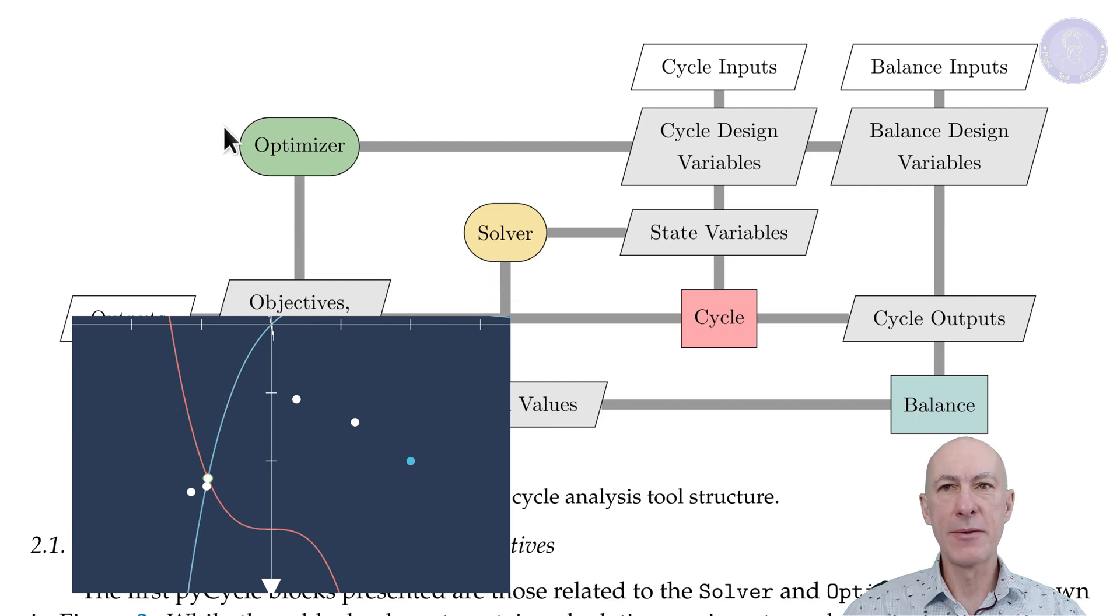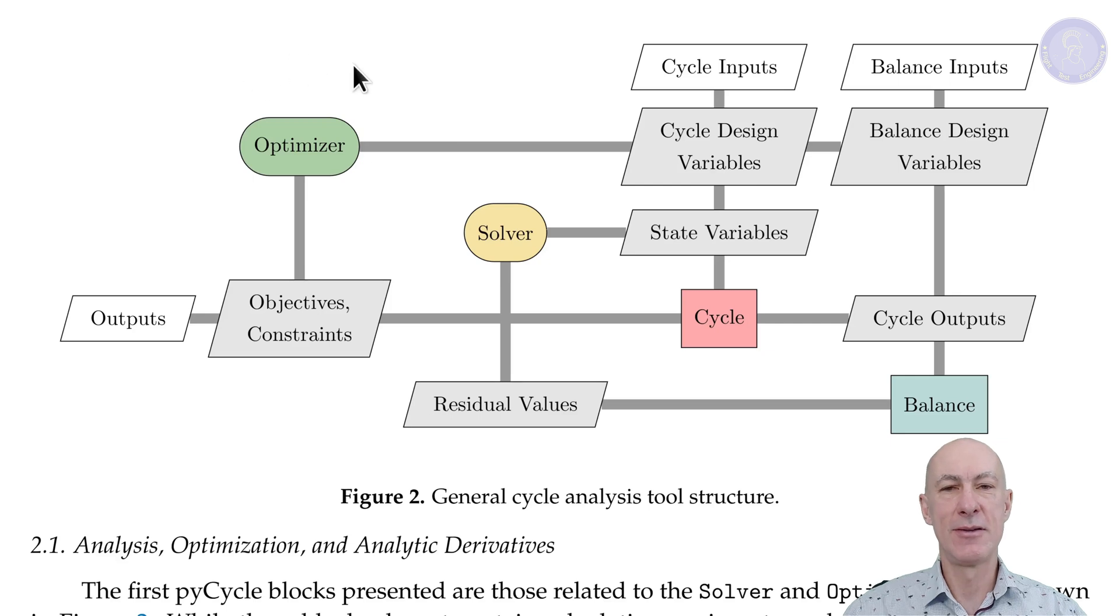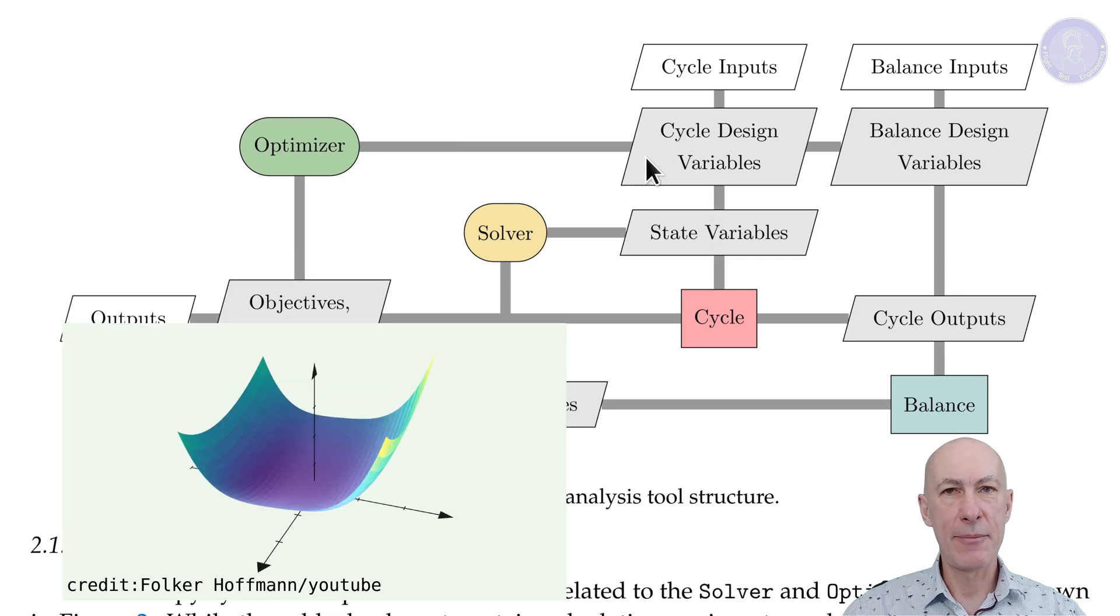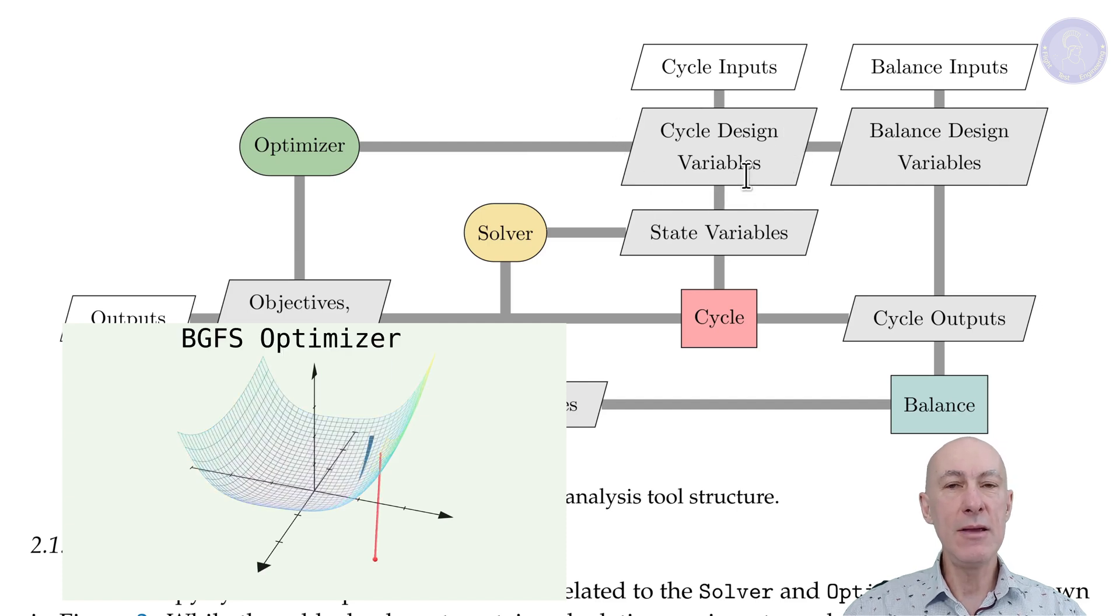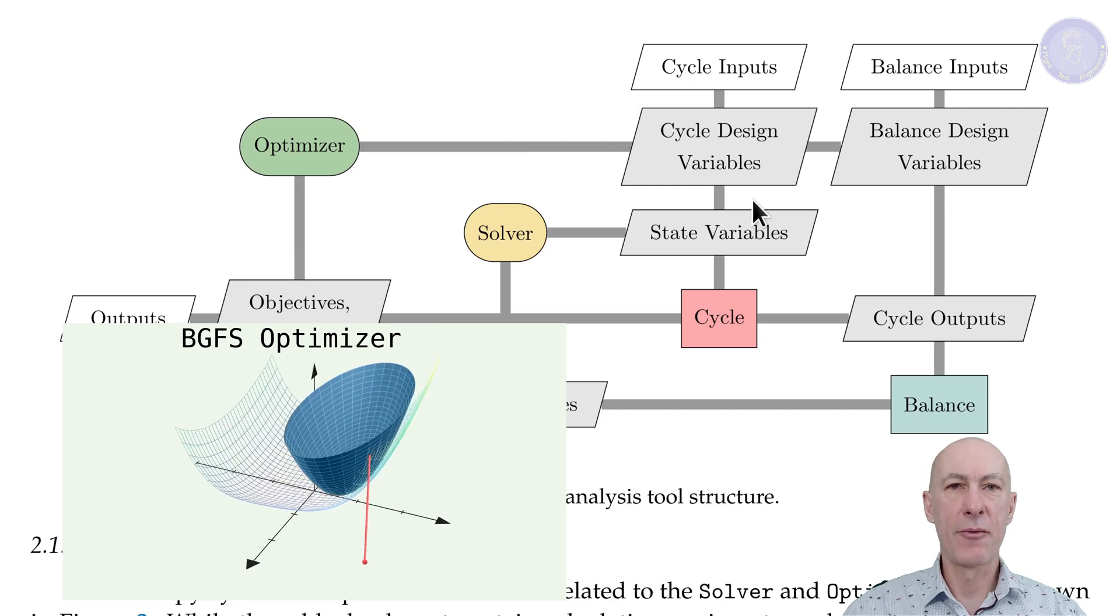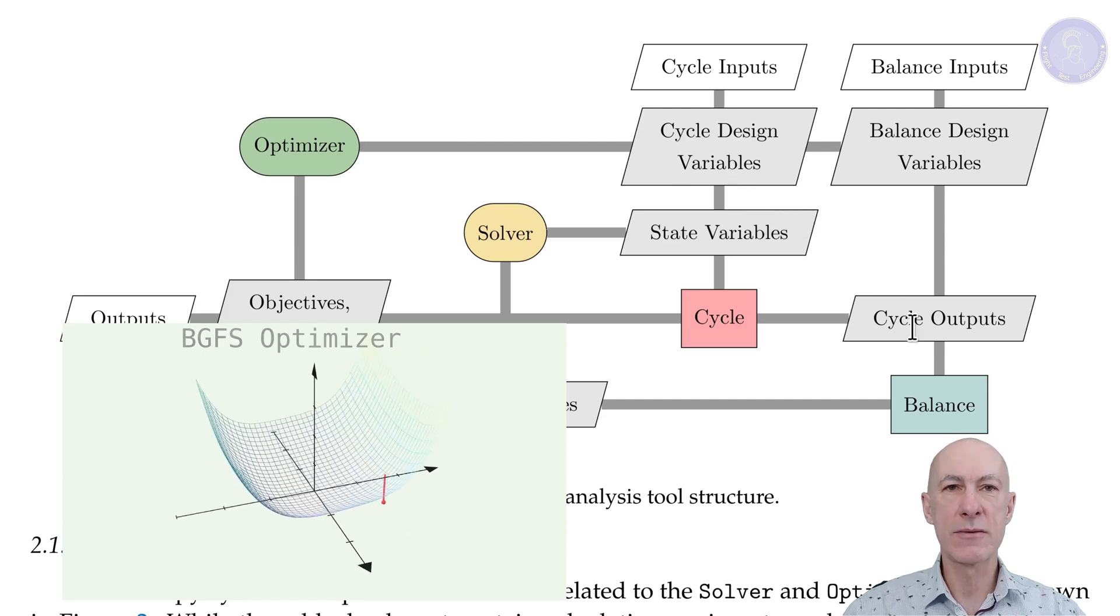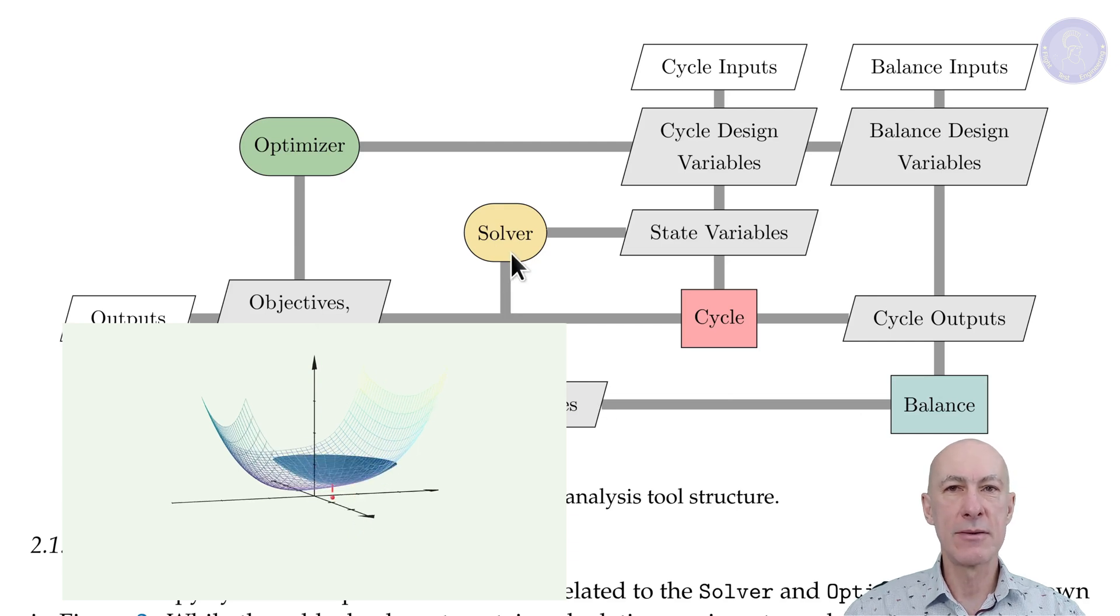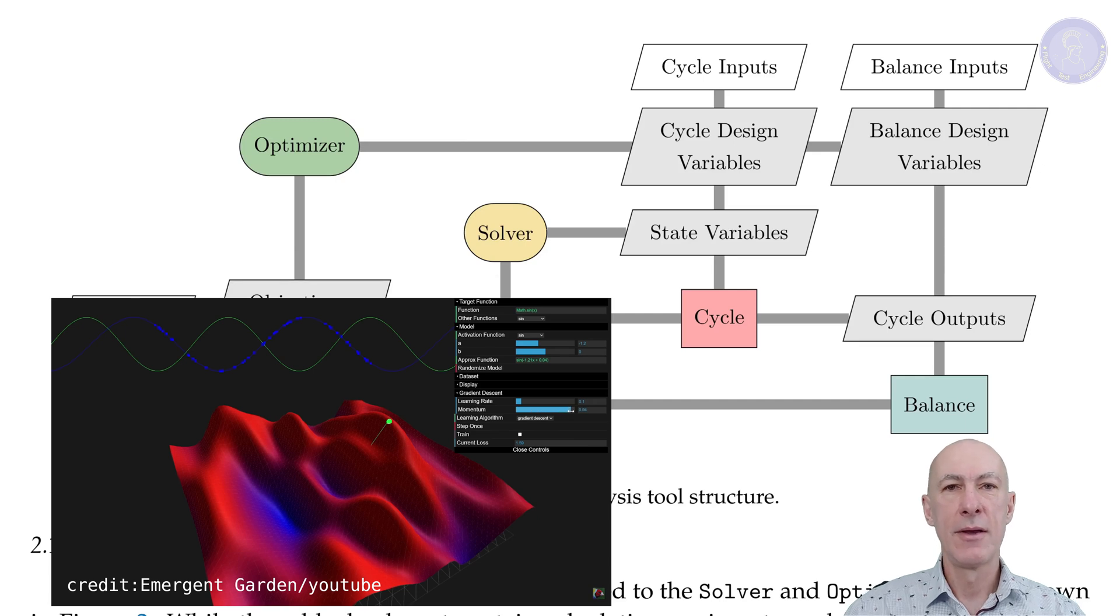So that is when the optimizer kicks in and changes the design variables to move the engine design closer to what we specified. For example, it might change the fan map to one that allows more pressure rise for the same mass flow. And to do this, it uses even more advanced math methods like gradient-based optimization techniques. It tweaks the design values and then waits for the cycle balance and solver blocks to come back with a viable engine and then checks that it is closer to what we want. It will do that until it converges like we're telling it to do.